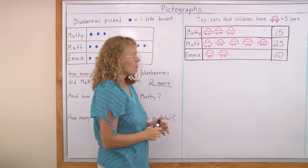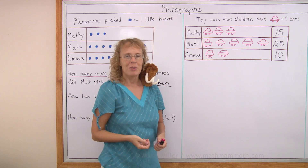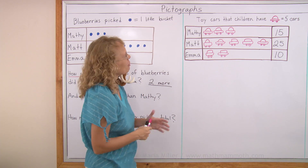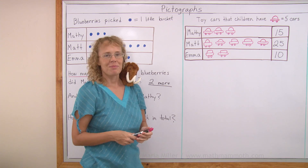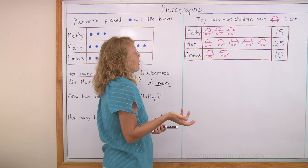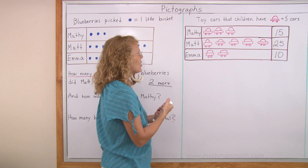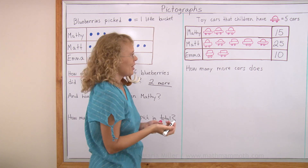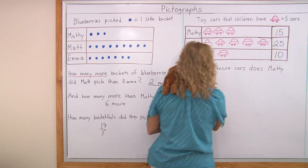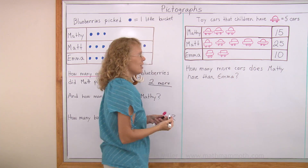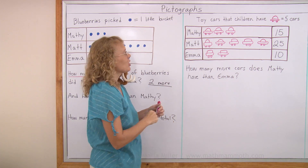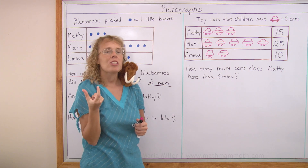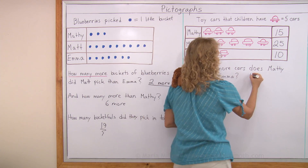Now there aren't any questions, which means you need to come up with some. What kind of questions could we ask about this pictograph if you were writing a math book? Maybe one would be a 'how many more' question — like, how many more cars does Matthew have than Emma? Matthew has three pictures and Emma has two, so Matthew has one picture more. But one picture means five cars, so Matthew has five more cars than Emma.